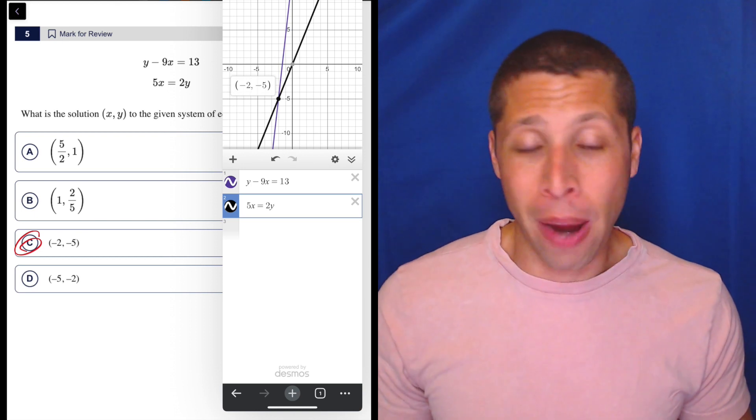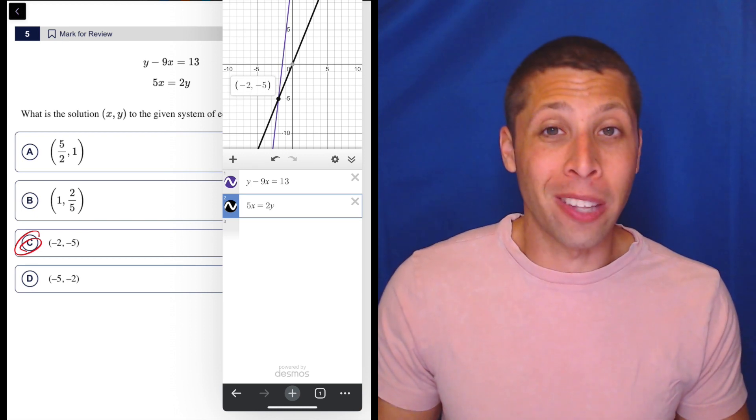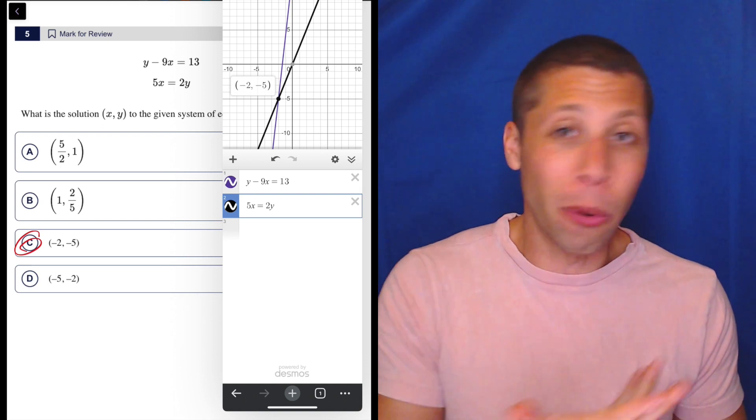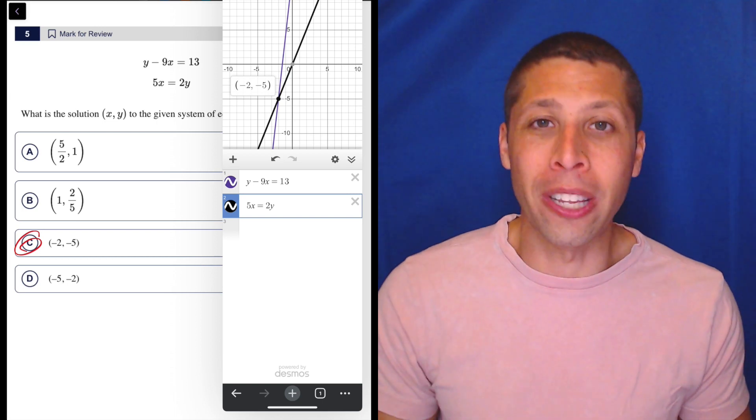But I want to save my brain power. This is the hard module. I know it's going to get crazy hard. And so the less thinking I have to do, the more thinking I can do later. It's a finite resource, your brain. So save your brain power and you'll use it later.